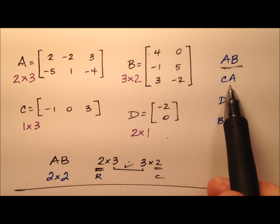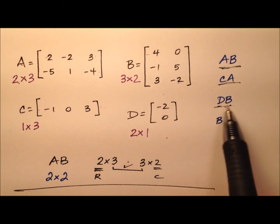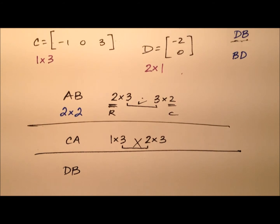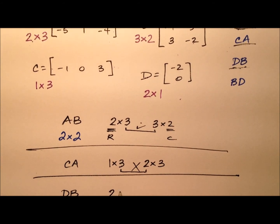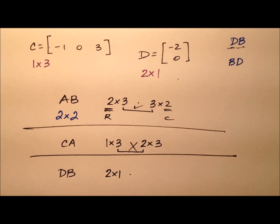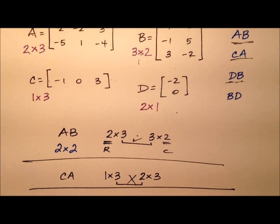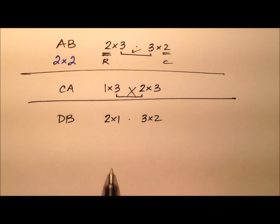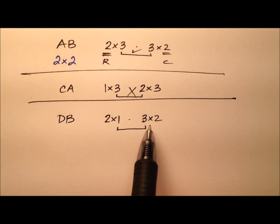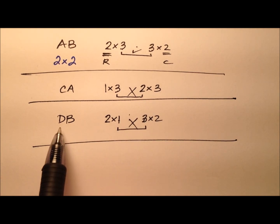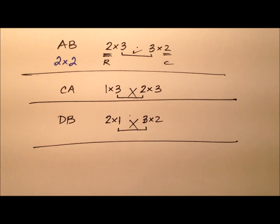Okay, so the next one is DB. So let's put DB. The dimensions of D are going to be 2 by 1, and we're going to multiply that by the dimensions of B, which is a 3 by 2. And once again, let's look at these inner values, so the number of columns here and the number of rows here. 1 and 3 are not the same, so we will not be able to do the product of D and B.